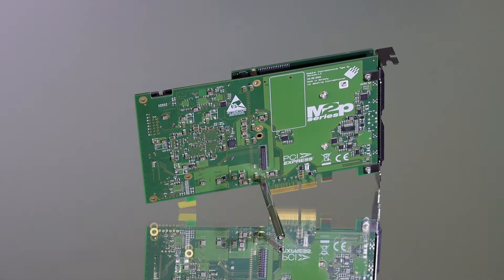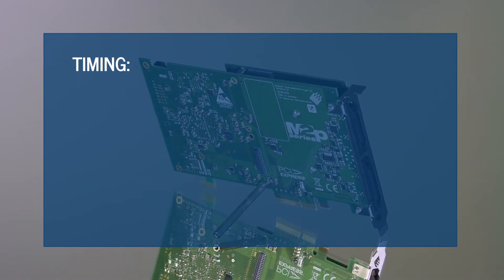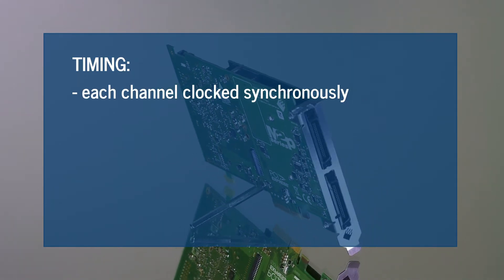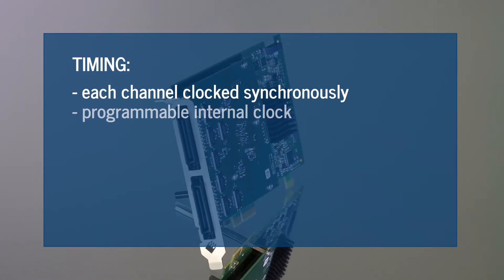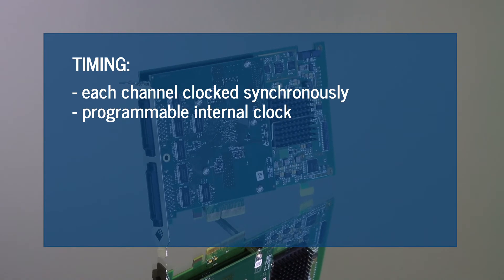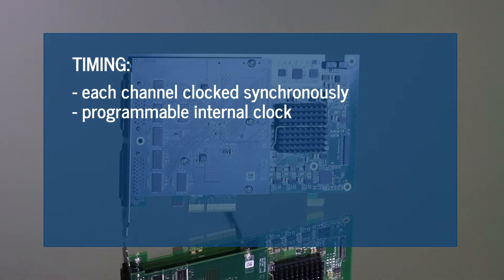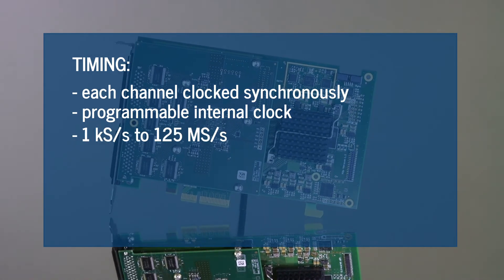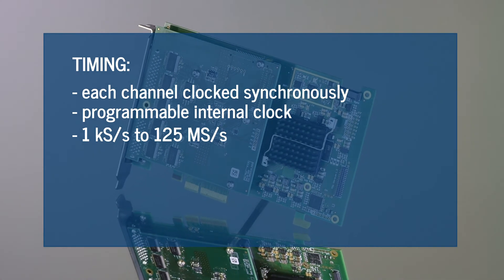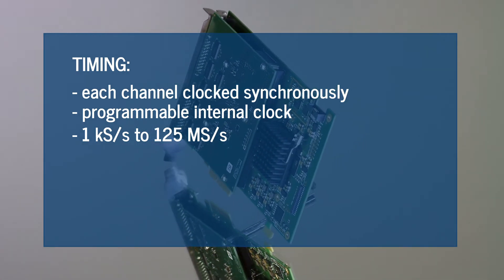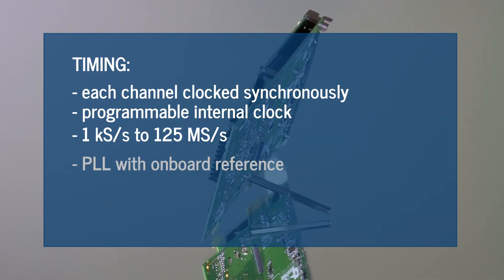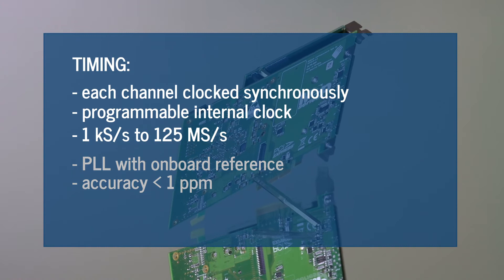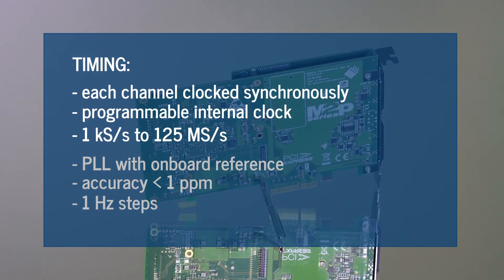When it comes to logic analysis or pattern generation, timing is challenging. To ensure the best precision, each channel of the digital I/O card is clocked synchronously. A programmable internal clock offers wide flexibility and allows sampling rates from one kilo sample per second to 125 mega samples per second. The clock design features a PLL with an onboard reference accurate to better than one part per million and a setup granularity of one hertz.